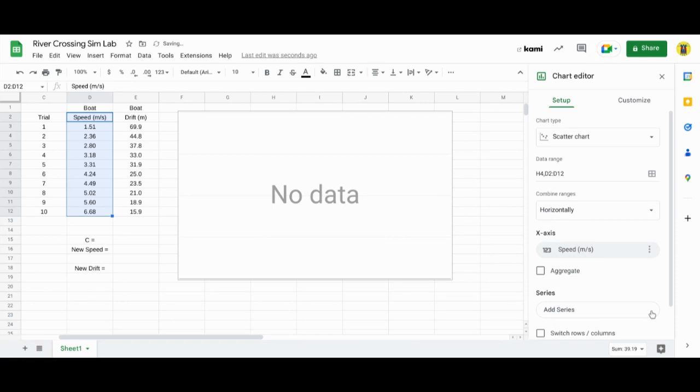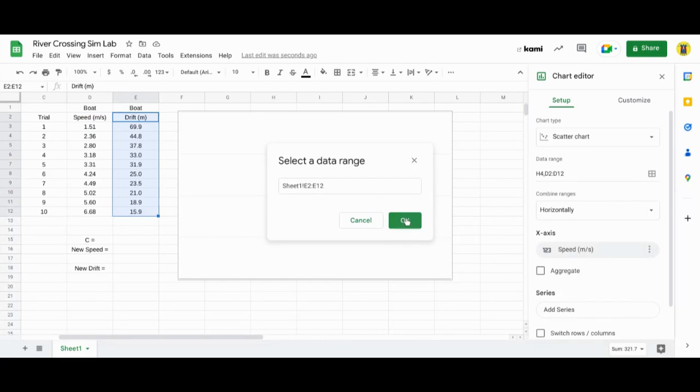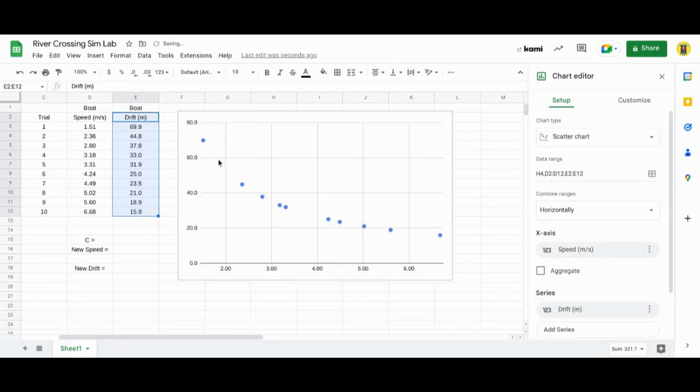Add series. This is the y-info. Select the drift data for the y-axis. There we go. This is an inverse relationship. As one increases, the other one decreases.